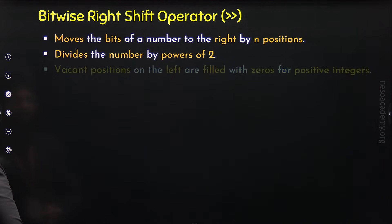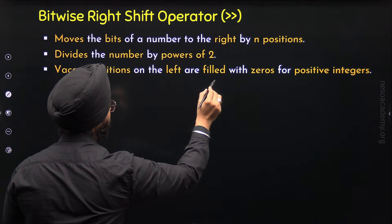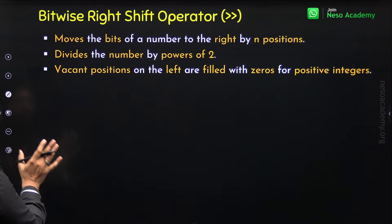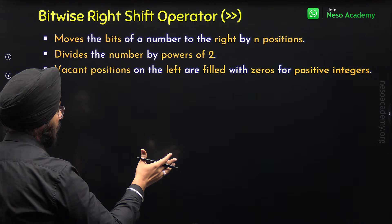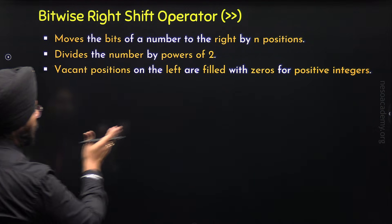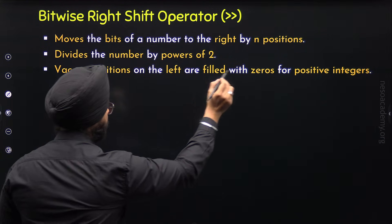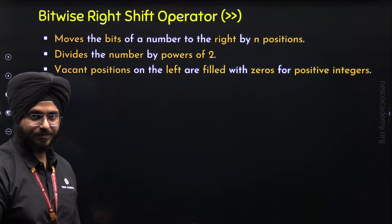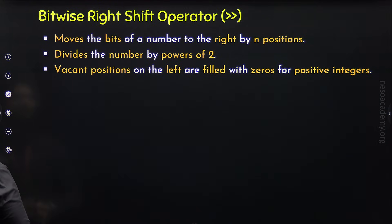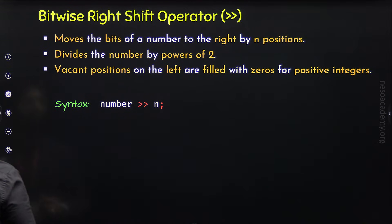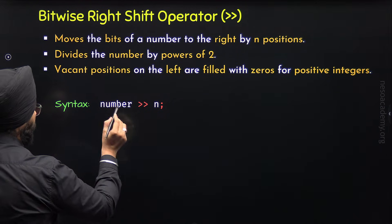For the right shift operator, vacant positions on the left are filled with zeros for positive integers. If bits are shifted right, there will be vacant positions on the left, and those are filled with zeros — this is true for positive integers. The syntax is: number, then the right shift operator, then n, representing the number of positions.